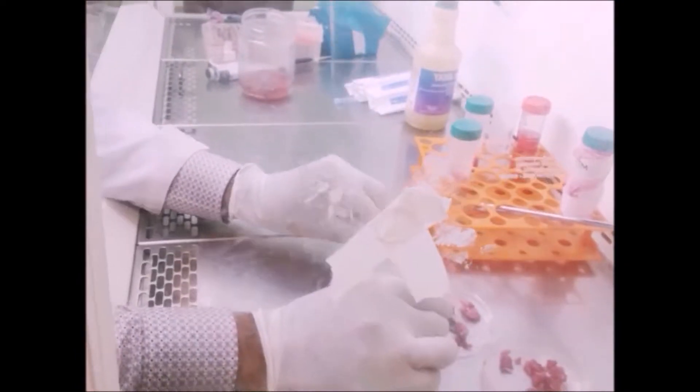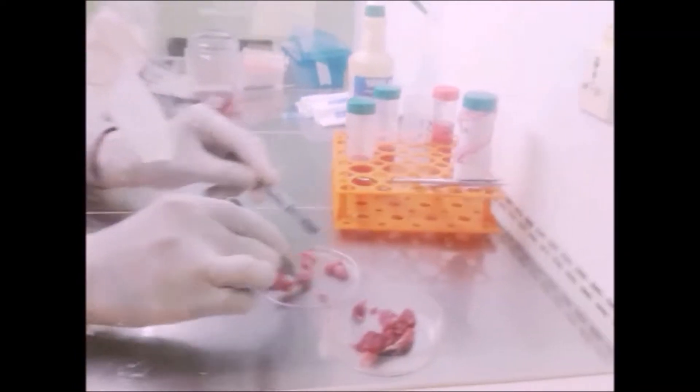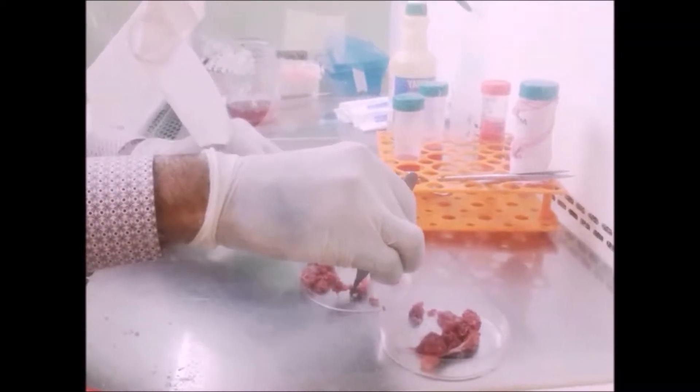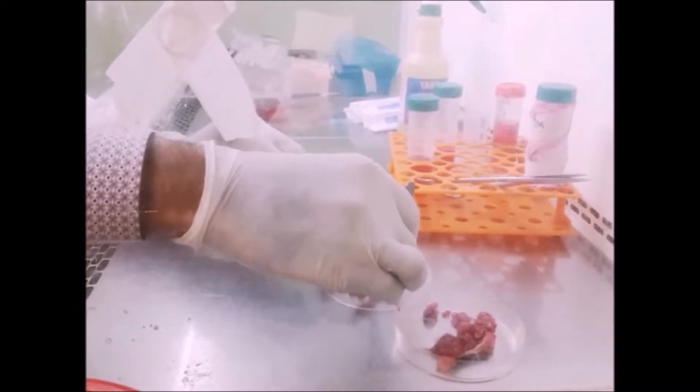We are extracting bone marrow stem cells. Different organisms have different forms of marrow in femur and tibia. Femur contains red marrow and tibia contains white marrow, such as in humans and other organisms.